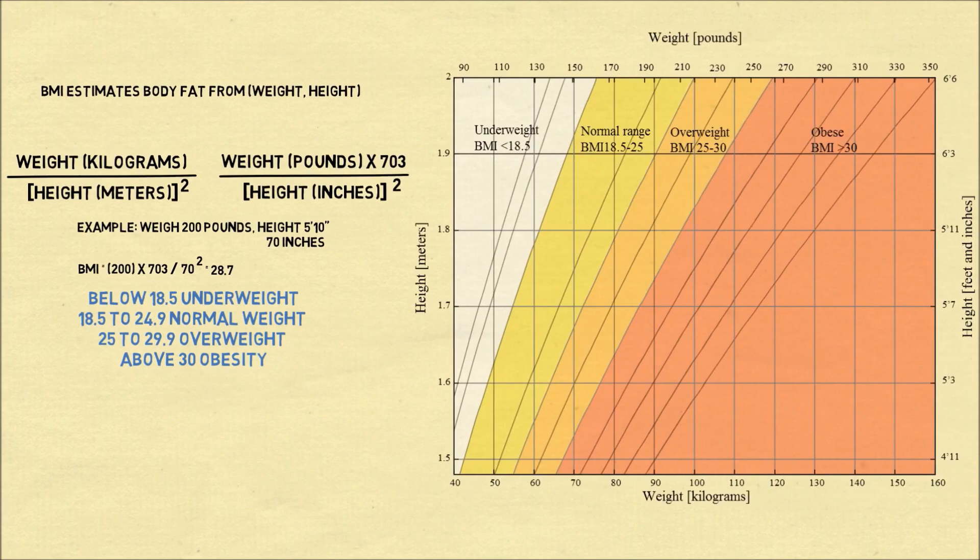We can similarly look at BMI by the following table. You can look and locate where your height and weight are, and it'll tell you which range you're in. So a person who is 200 pounds and 5 feet 10 would be about where the black dot is, which is in the range of being overweight.